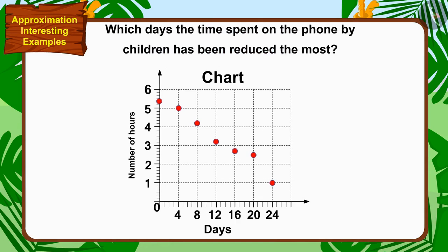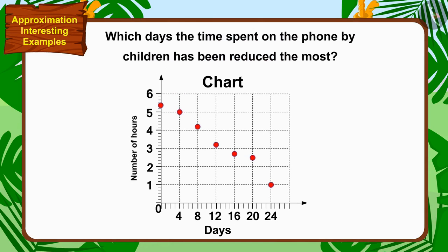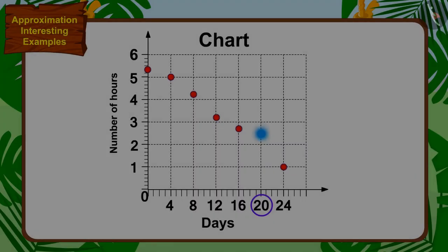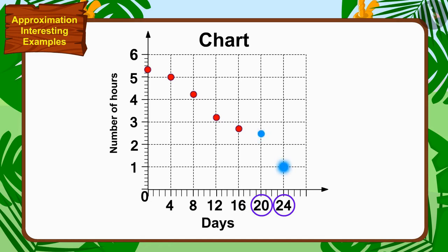Children, can you find the answer to this question by looking at this chart? If you want, you can find a solution by stopping the video. The distance between the heights of the dots of the 20th and 24th days is the highest. Hence, between the 20th and 24th days, there is a cut of 1 hour and 30 minutes.